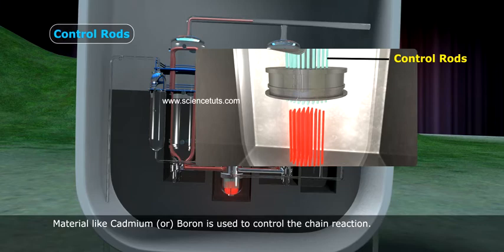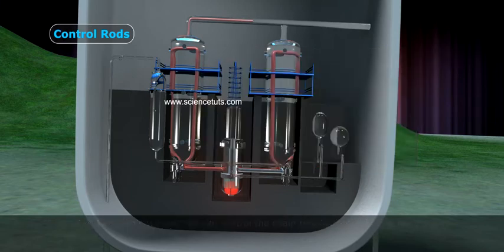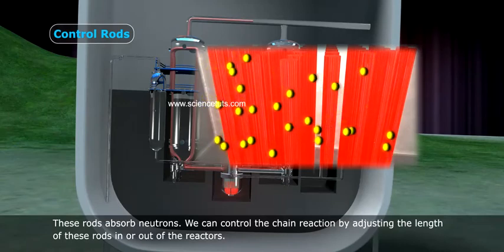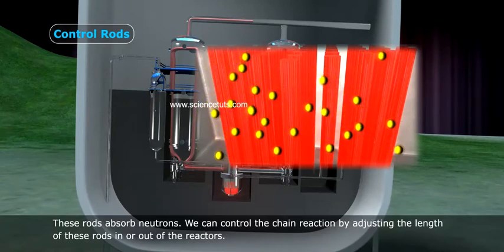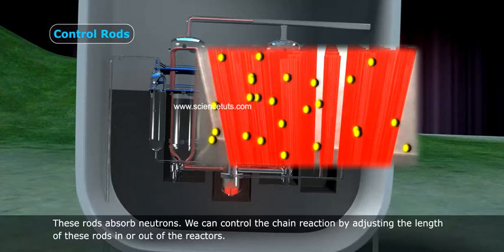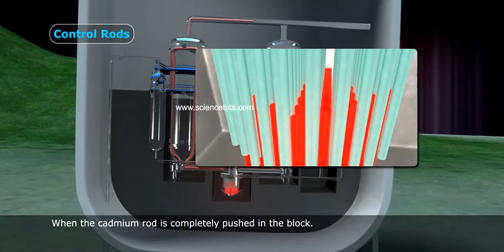These rods absorb neutrons. We can control the chain reaction by adjusting the length of these rods in or out of the reactor. When the cadmium rod is completely pushed in the block, the neutrons are absorbed and the chain reaction stops.